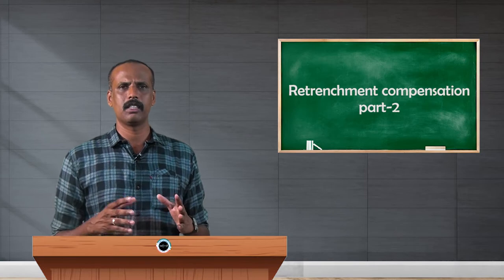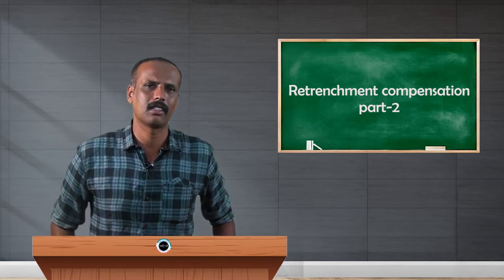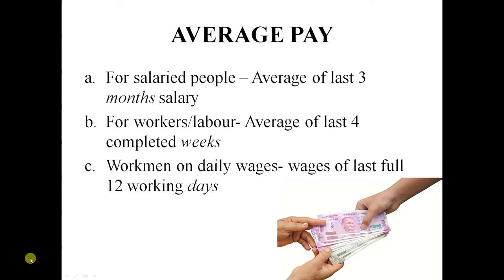We discussed that compensation is equal to 15 days average salary. There are three categories: one is monthly salary employee, second is weekly salary employee, and third is daily wages. For monthly salary employees, average pay is the last 3 months average pay.